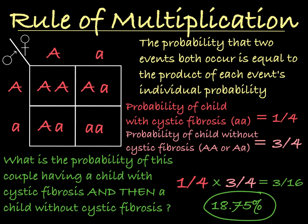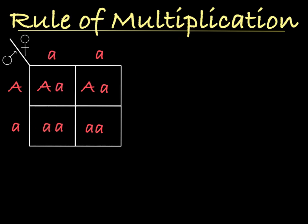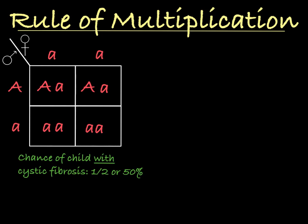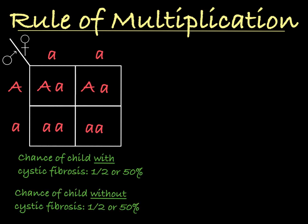All of these same rules apply when the parents have different genotypes. For example, if we have a mother with cystic fibrosis and a father who is heterozygous, we can complete a Punnett square and see that they have a 50% chance of having a child with cystic fibrosis and a 50% chance of having a child without cystic fibrosis. To get these percentages, I used the rule of addition to add together the probabilities of the two boxes with the little a little a cystic fibrosis genotype — one-quarter plus one-quarter, which is one-half, or 50%. The same math applies for the other two boxes.